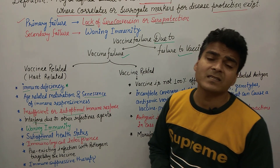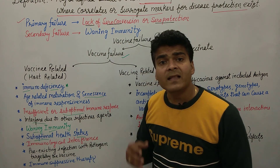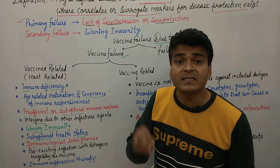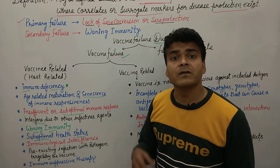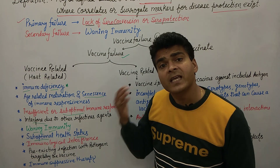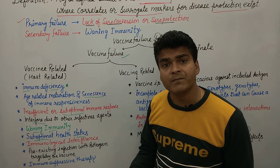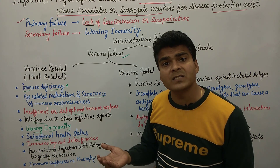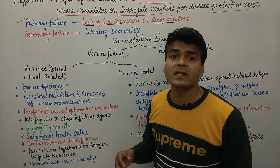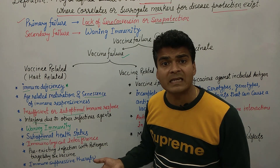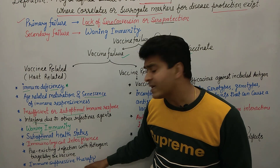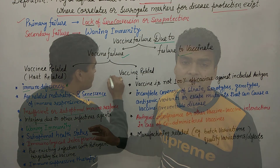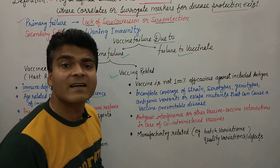Then immunosuppressive therapy — another possible reason for vaccination failure is when the person we vaccinated is already on immunosuppressive therapy, already taking immunosuppressive agents like corticosteroids or other immunosuppressive agents such as tacrolimus. For example, someone undergoing organ transplantation who received the COVID vaccine — in such a case of organ transplantation or immunosuppressive therapy, vaccination failure will occur.